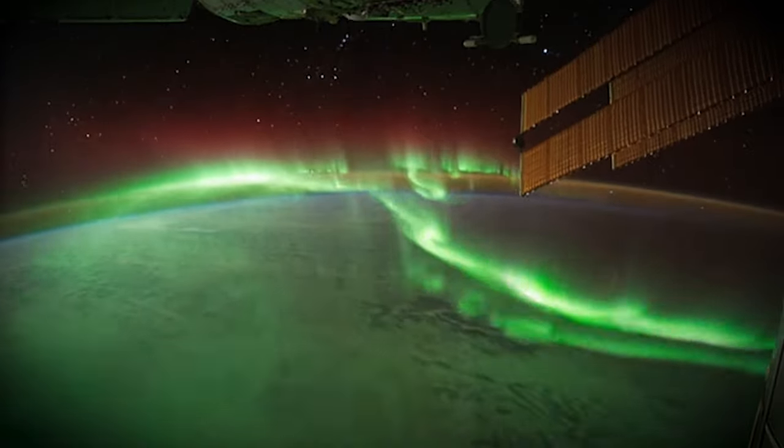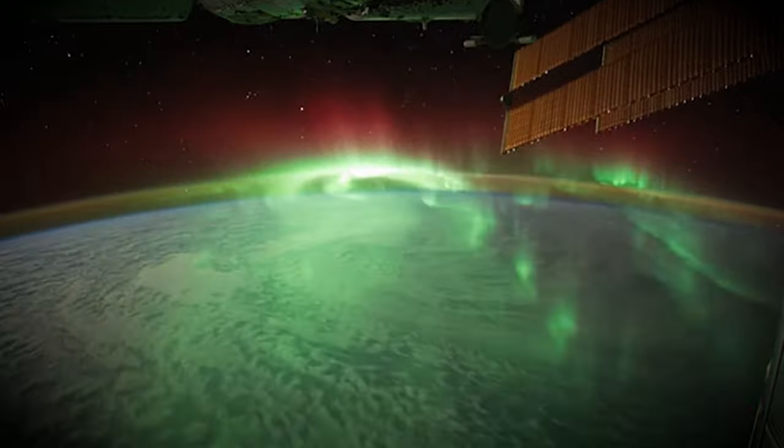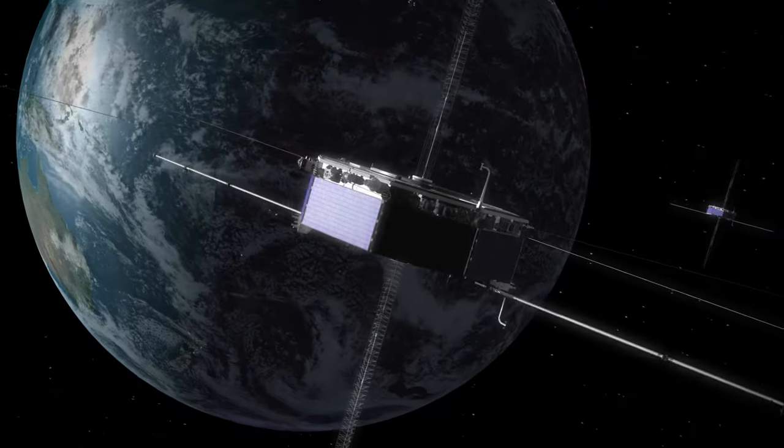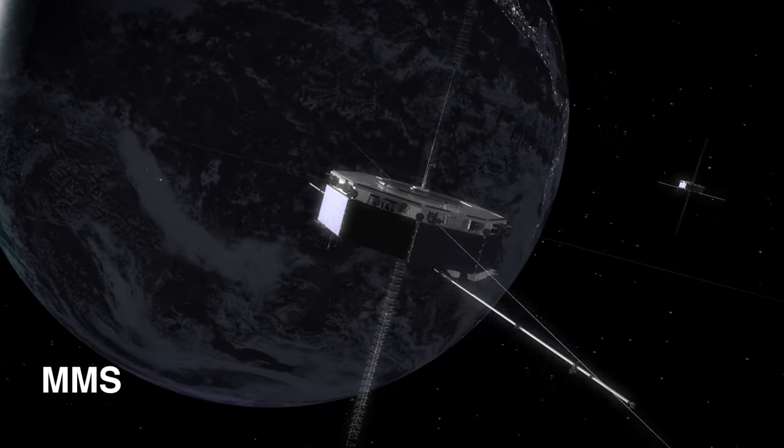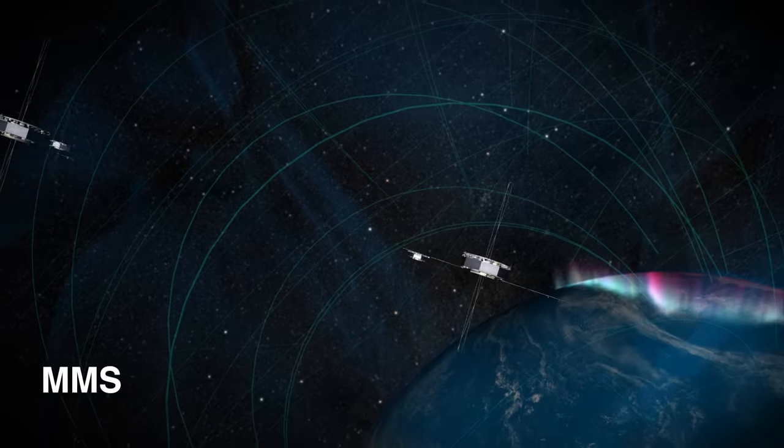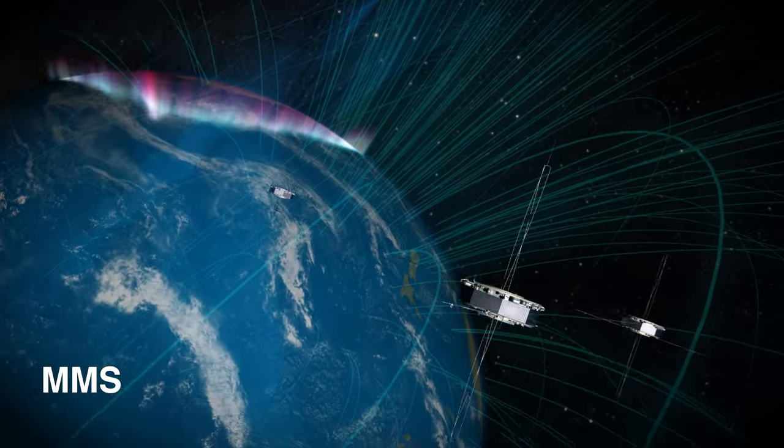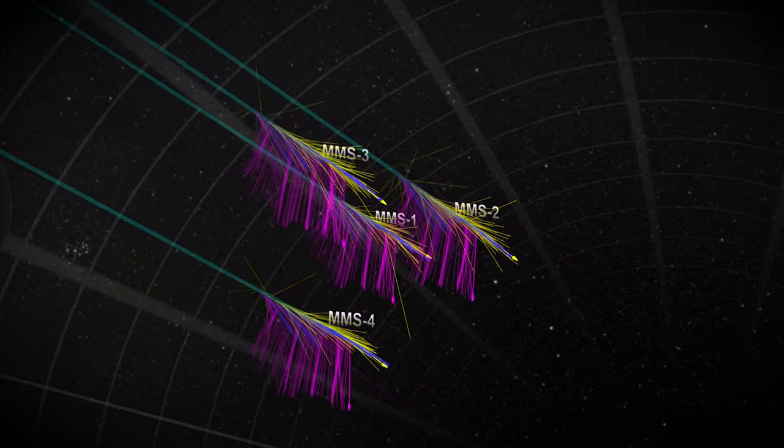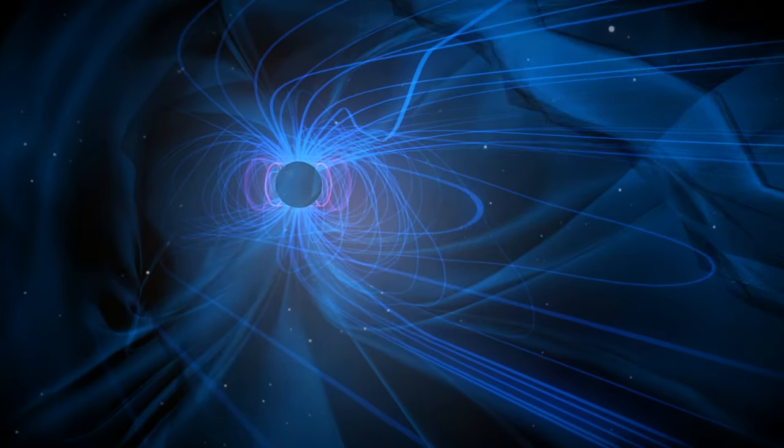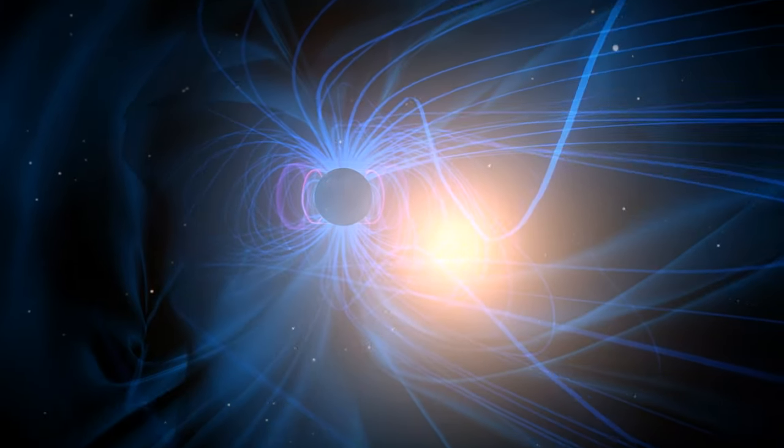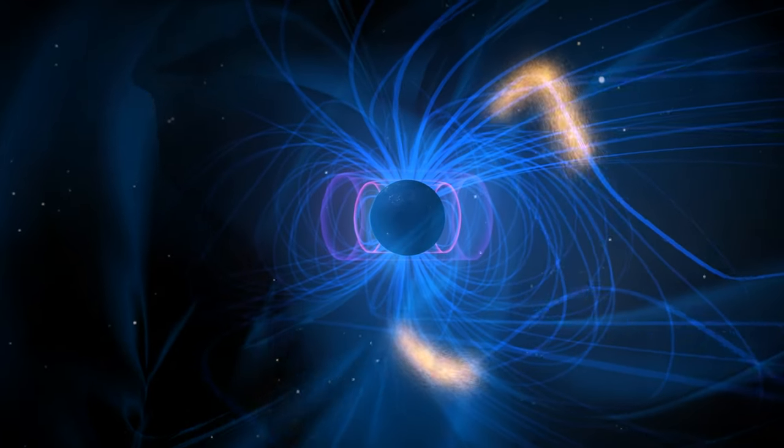Near-Earth space is the easiest place to study magnetic reconnection, and NASA does this with its Magnetospheric Multiscale Mission, or MMS. MMS uses four identical spacecraft to measure magnetic fields and particles in 3D, 100 times faster than previous missions. This has revealed new insights on the small-scale details of magnetic reconnection and the nature of plasma itself.